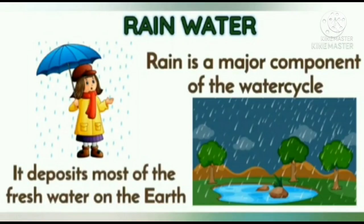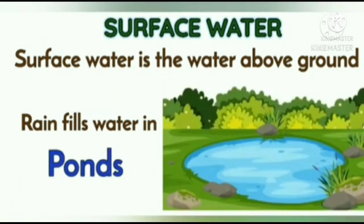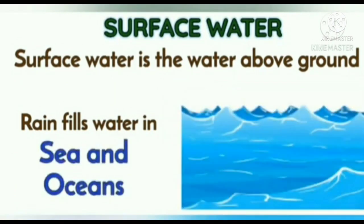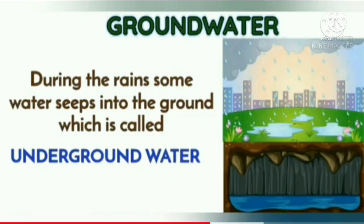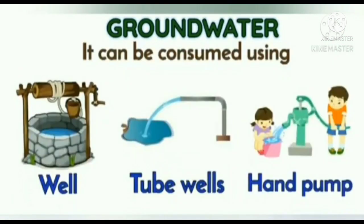Rainwater is a major component of the water cycle and deposits most of the fresh water on the earth. Surface water is the water above the ground; it includes streams, lakes, ponds, seas, and oceans. Surface water shall be consumed only after it has been properly filtered and disinfected. Another source is groundwater. During rain, some water seeps into the ground, which is called underground water. Groundwater is present beneath the earth's surface and can be accessed using wells, tube wells, and hand pumps.